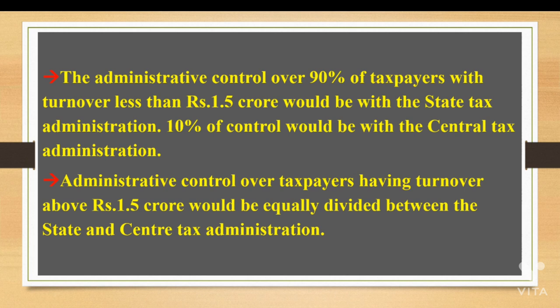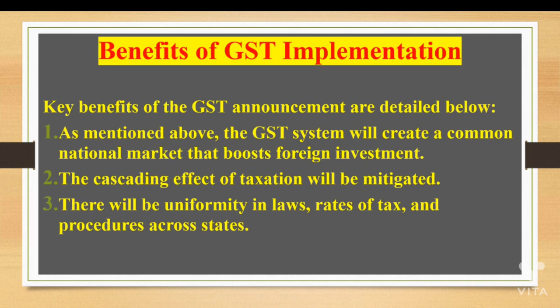10% of control would be with the central tax administration. Administrative control over taxpayers having turnover above Rs. 1.5 crore would be equally divided between the state and central tax administration.